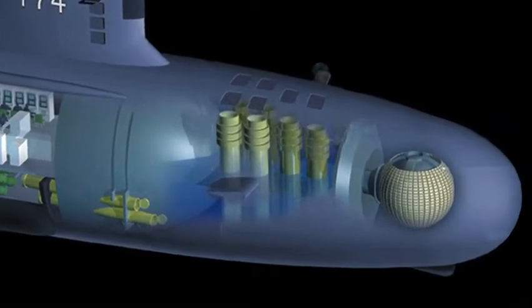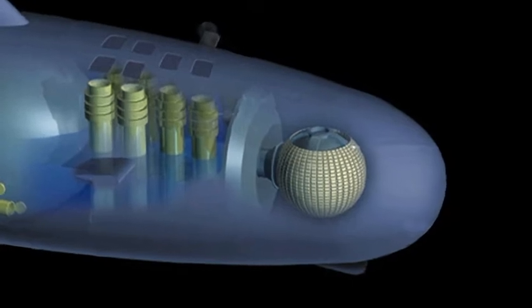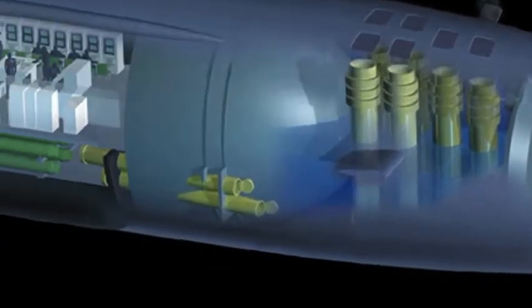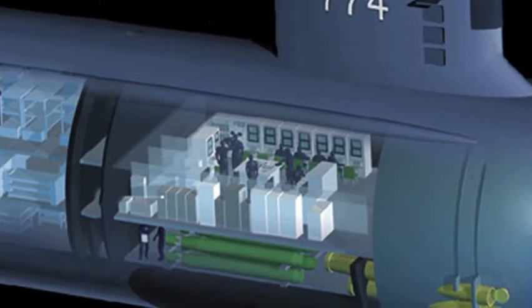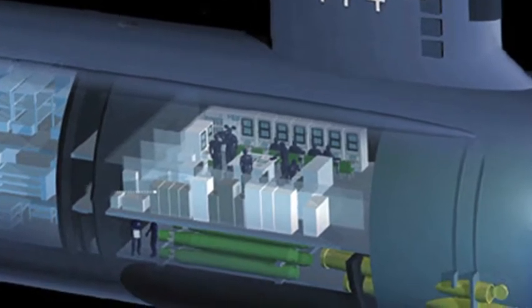At the very bow of the submarine, we have a sphere with a large number of sonar transducers on it. Just inside of that, we'll have the torpedo room. Above the torpedo room, you'll normally find the control room. Also in the control room, you'll find the periscopes.